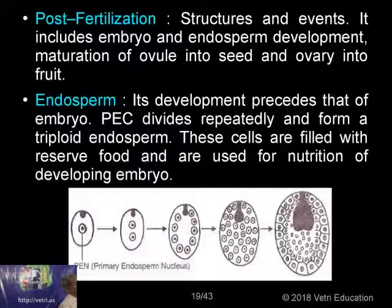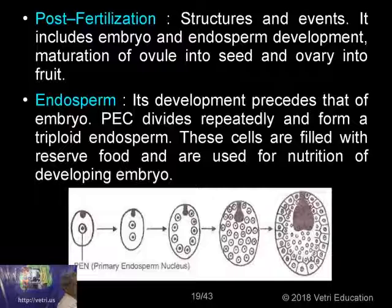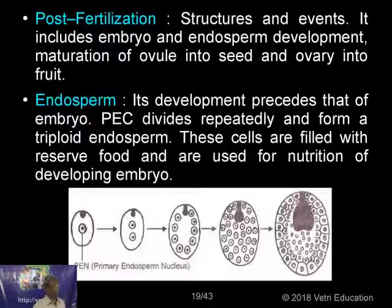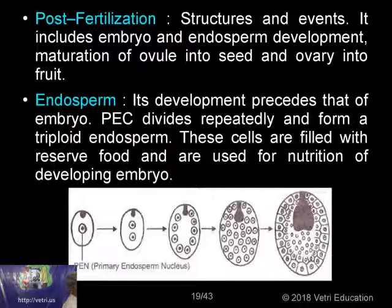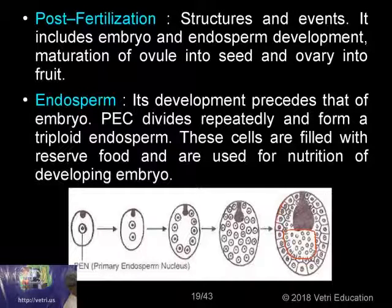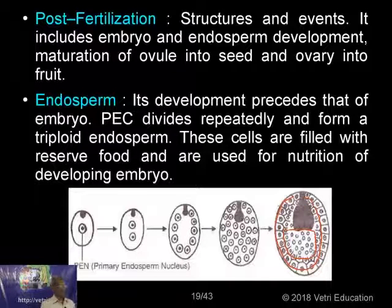Embryo development is completely cellular in nature. First it becomes a globular stage, then a heart-shaped stage, passing through different stages. Then two cotyledons are produced if it is a dicotyledonous plant. The endosperm is first free nuclear, and then slowly cell wall formation takes place and it becomes cellular.